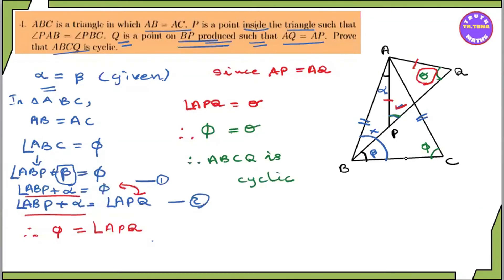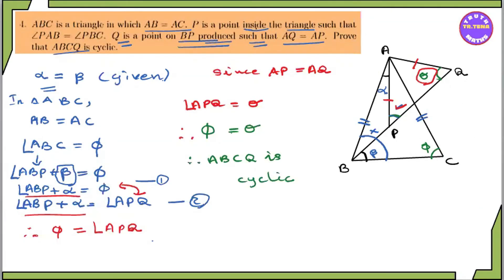So every triangle gives angle ABB equal to angle ABQ. The angle ABB plus L5 equals angle ABQ. Therefore, A, B, C, Q is cyclic.